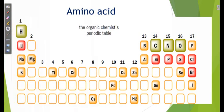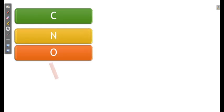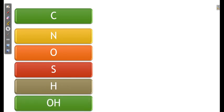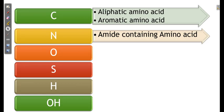Let us go ahead. We start from the periodic table, and from it we conclude that among all elements, only a few are used for the construction of amino acids and our body parts. The elements used are carbon, nitrogen, oxygen, sulfur, and hydrogen. With respect to carbon, we remember aliphatic amino acids and aromatic amino acids. With respect to nitrogen, we remember amide-containing amino acids.